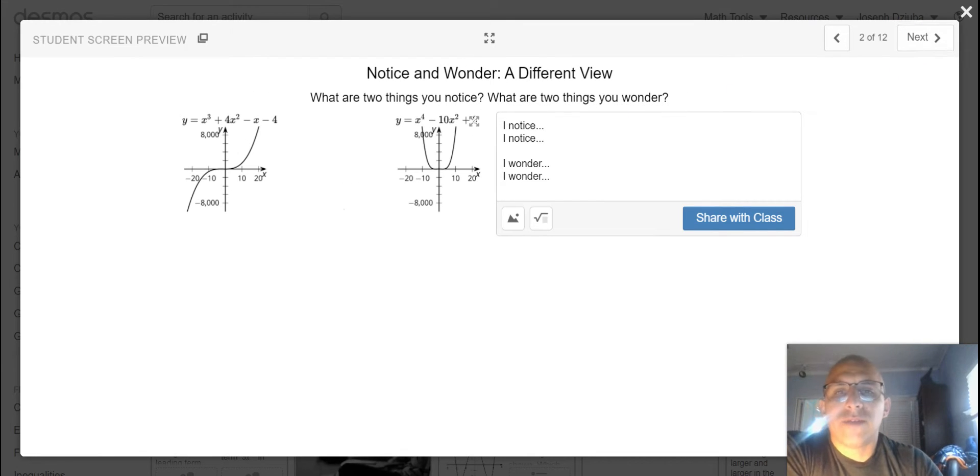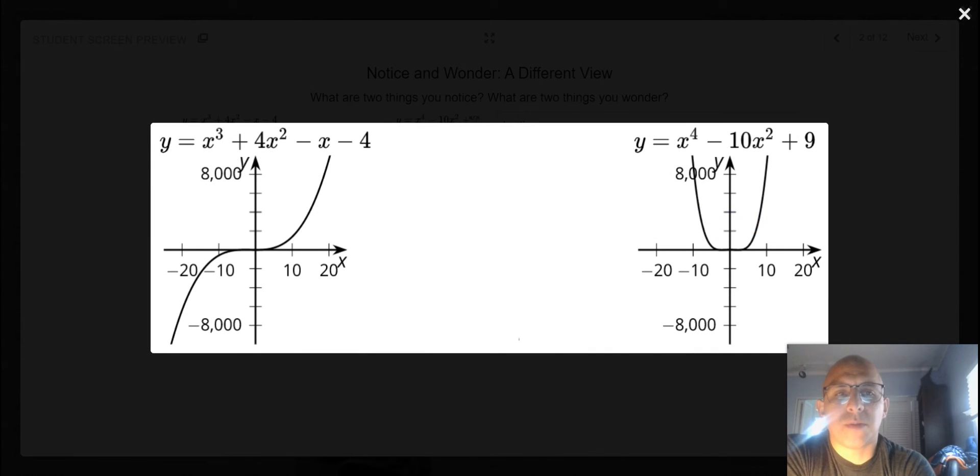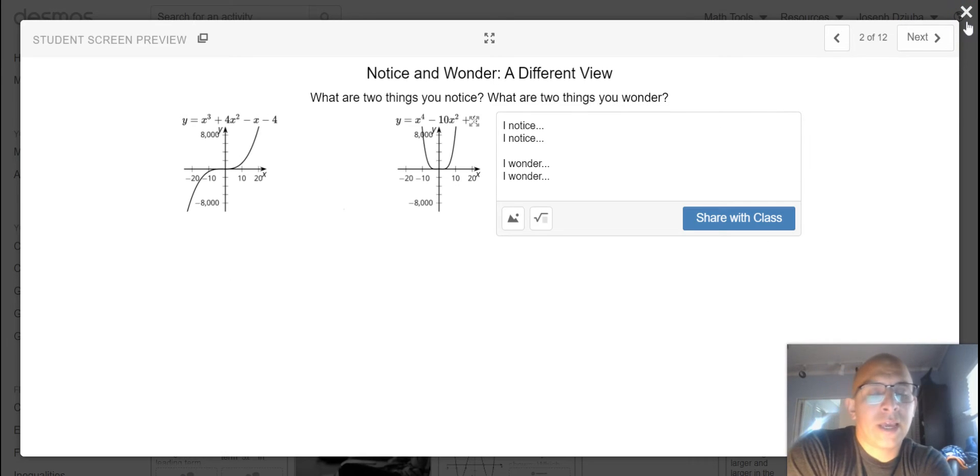Alright, so we have these two functions here, two different polynomial functions obviously graphically behaving differently. I would like for you to generate some discourse with your peers and decide two things that you notice and two things that you wonder.